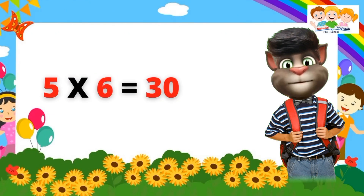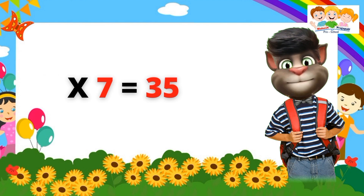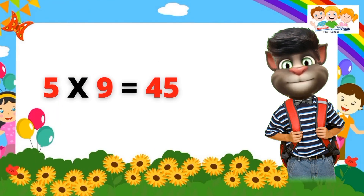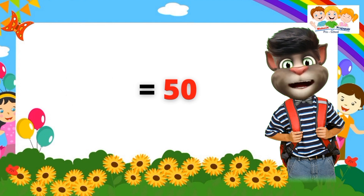Five sixes are thirty. Five sevens are thirty-five. Five eights are forty. Five eights are forty. Five nines are forty-five. Five nines are forty-five. Five tens are fifty. Five tens are fifty.